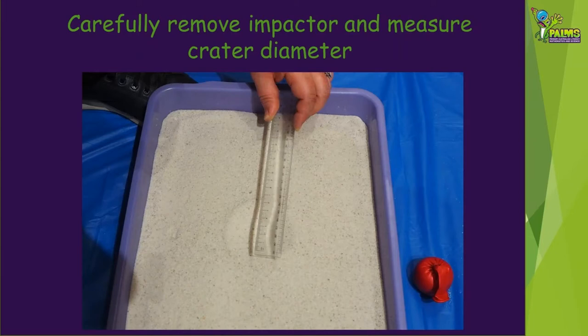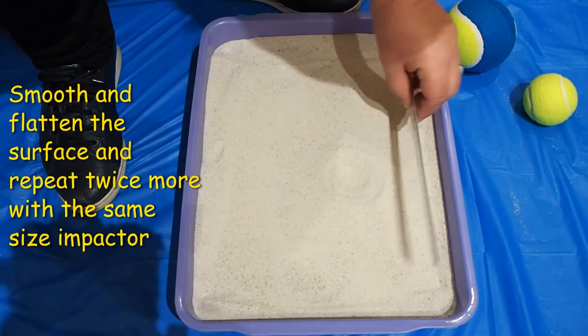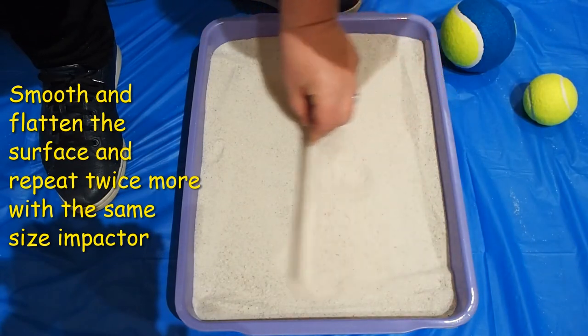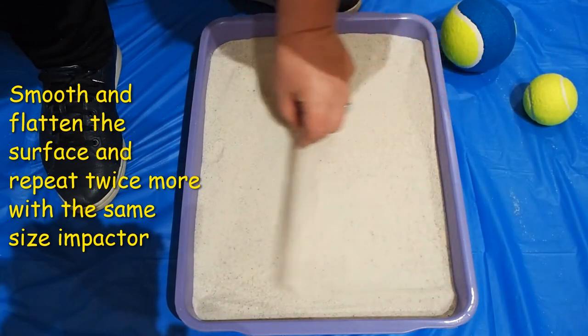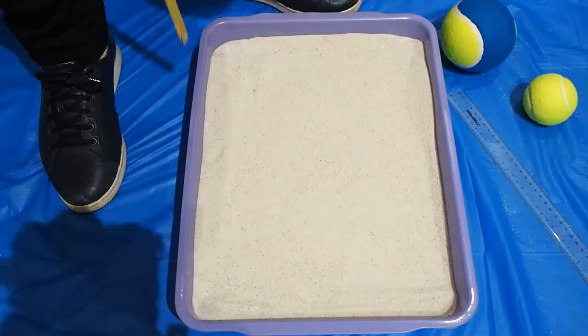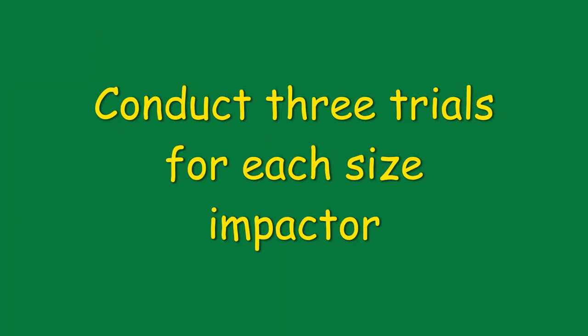If you find it difficult to see the crater, you might like to try again — this time lightly spraying the surface with water to dampen the sand before dropping the impactor. Flatten and smooth the surface, then do two more trials with the same impactor. Do three trials for each size of impactor you've made.